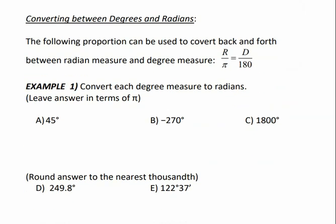Now, we can convert between degrees and radian measures by using this proportion: radians divided by pi is equal to degrees divided by 180.